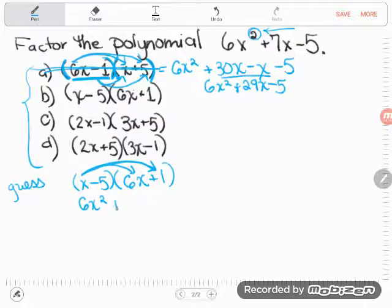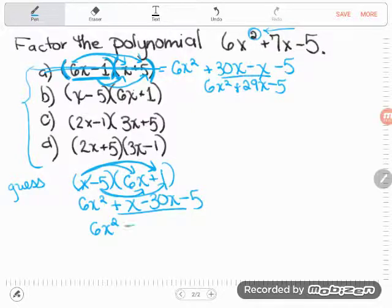x times positive 1 is positive 1x, or as I said before, just positive x. Mathematicians do not generally write a coefficient of 1. Now I'm done passing out the x; it's time to pass out the negative 5. Remember, bring its sign with it—treat it like a negative 5. Negative 5 times 6x would be negative 30x, and negative 5 times positive 1 will be negative 5. And once again, you should combine any like terms you see. That's how we add and subtract in algebra—we combine like terms.